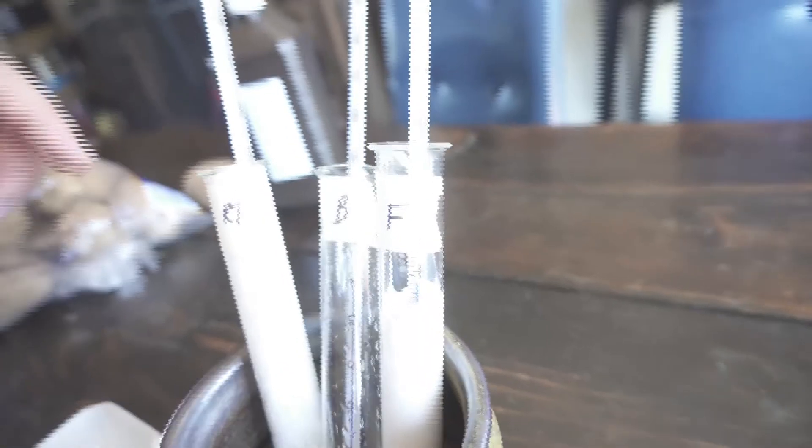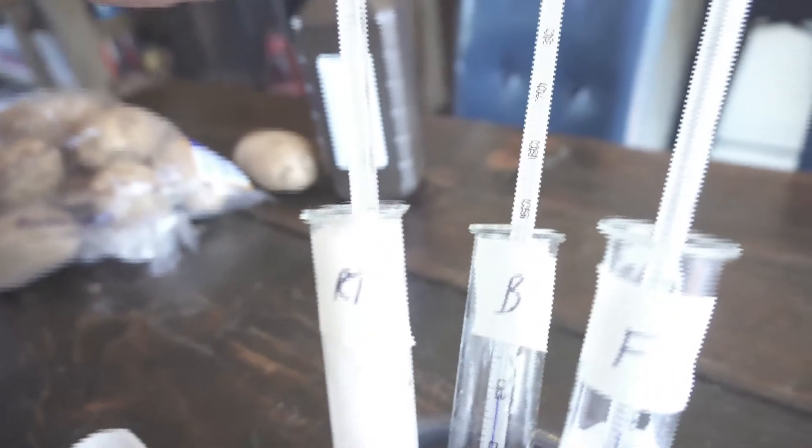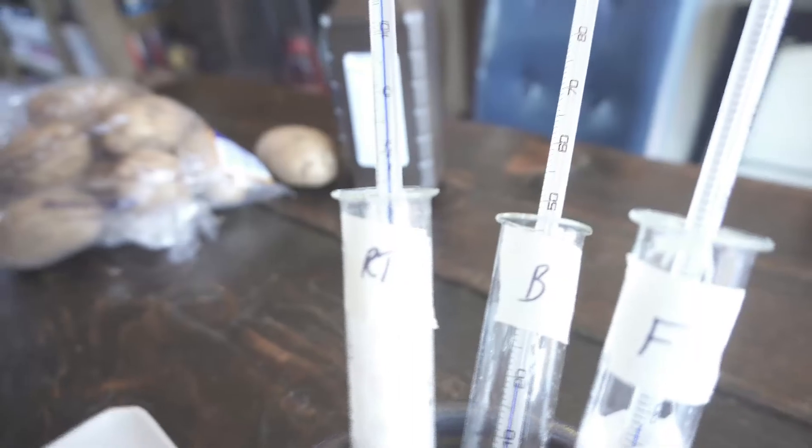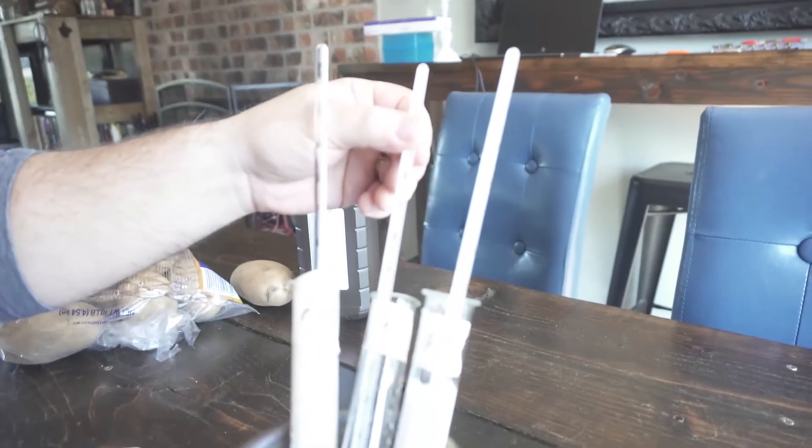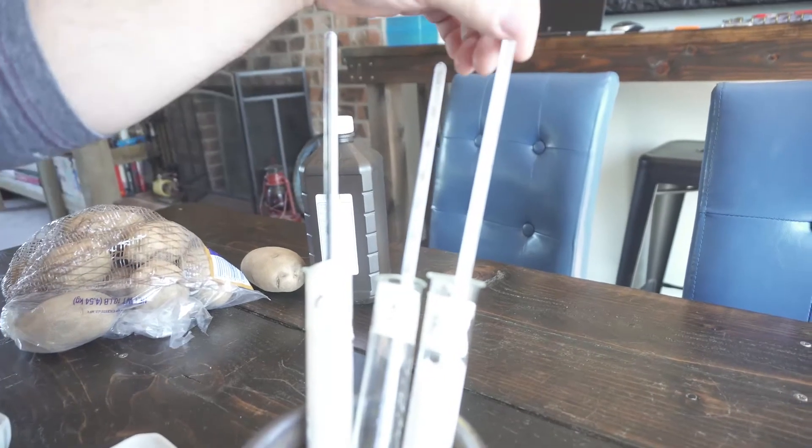So the bubbles have reached the top of the test tube for the room temperature, so we're going to call that one done, and we're going to note that the temperature has gone from just under 20 Celsius up to 22 Celsius. We'll leave that in. The boiled, sorry, the baked potato, no change in temperature there, and no bubbling. The frozen potato has actually gone down in temperature a little bit. It started out at 19, and it's actually gone down to 18. Those potatoes were cold, so they've altered the temperature of the liquid that they were in.